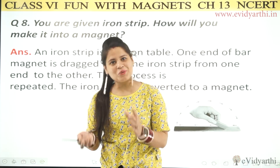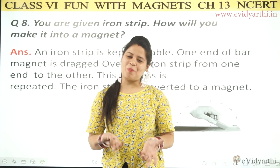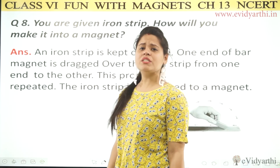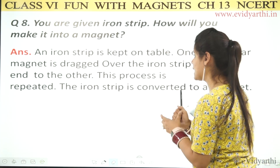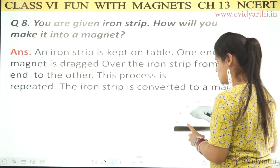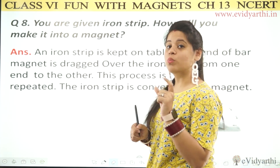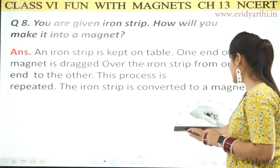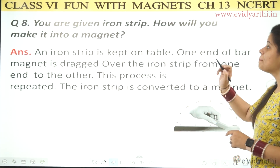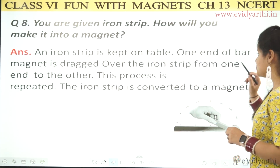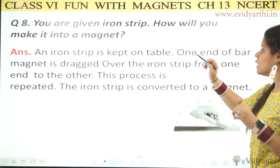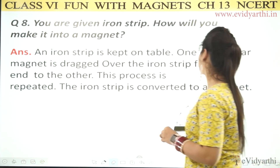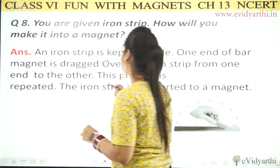We have also covered this topic in notes. In simple words, I will read it out for you. The iron strip is kept on a table. One end of a bar magnet is dragged over the iron strip from one end to the other.